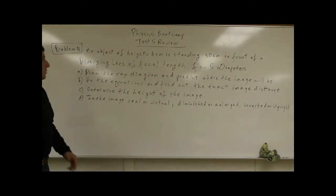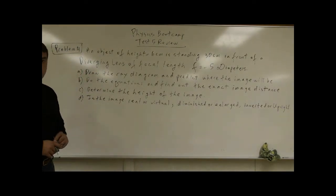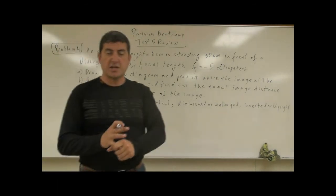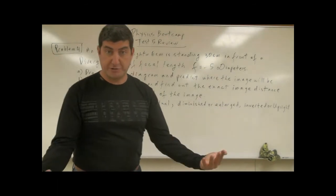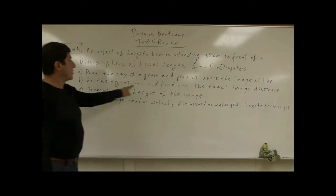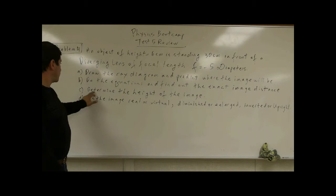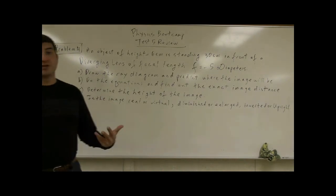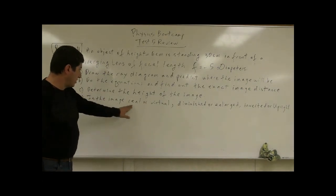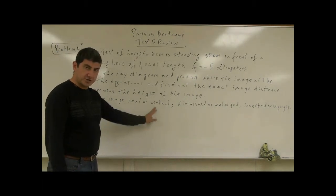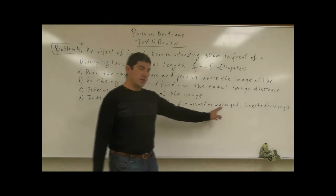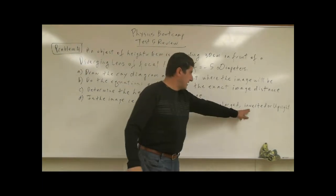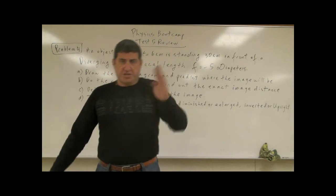The question says: A, draw the ray diagram and predict where the image will be. So we have to be able to do the ray diagramming before we even do the equations, find out where the image will be and what its properties are. B, do the equations and find the exact image distance. C, determine the height of the image, and then determine: is the image real or virtual, diminished or enlarged, inverted or upright?